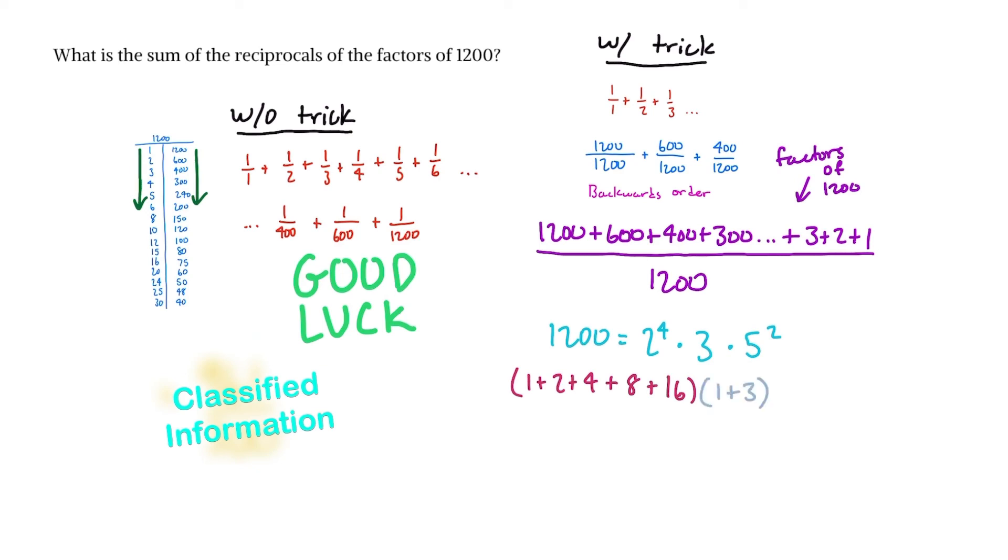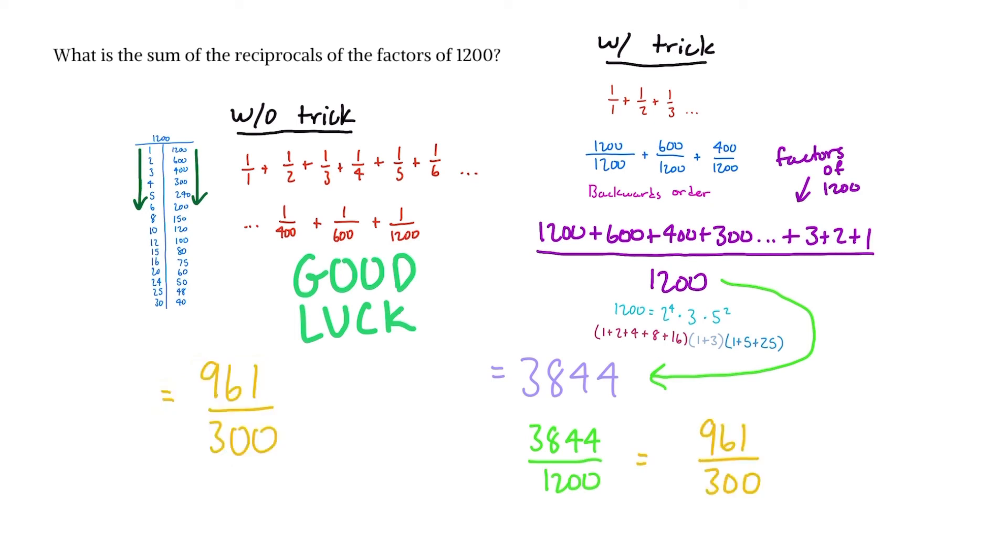× 5^2. Now we just multiply (1 + 2 + 4 + 8 + 16) × (1 + 3) × (1 + 5 + 25), and this is 3844. Then, remembering to divide by 1200, this simplifies to 961/300. This is the correct answer—we can now consider this problem solved.